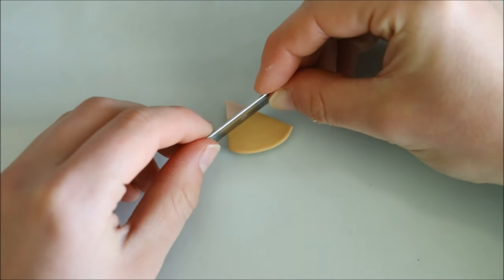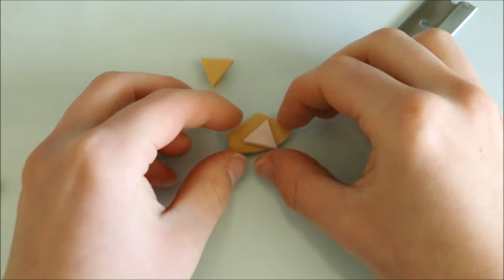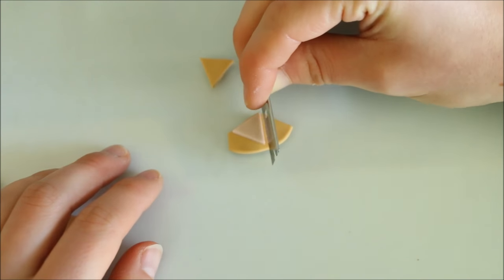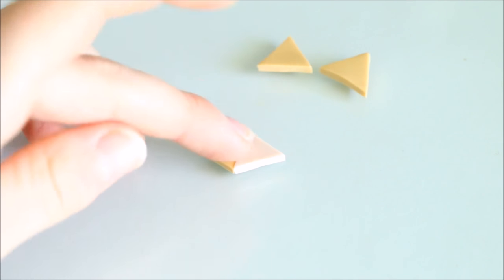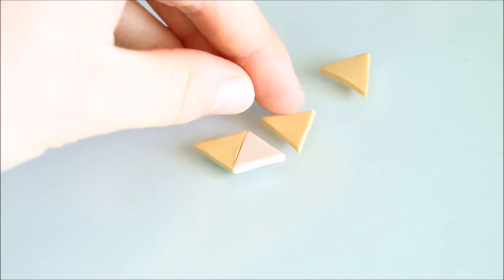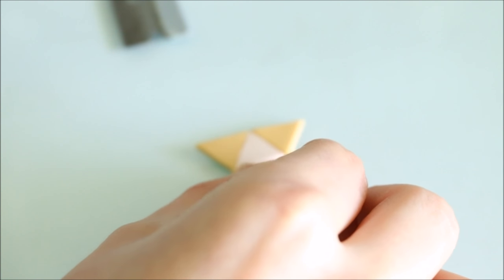I then took the gold clay and used the triangle as a template to cut three more of the same size. Once I had my four triangles I joined them all together so I placed the pink one in the center and connected the gold ones around the outside. I also trimmed off any excess clay as I went.